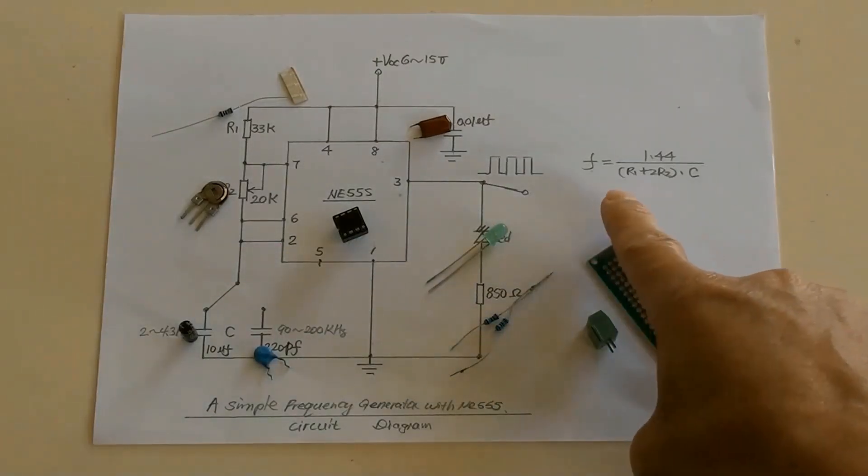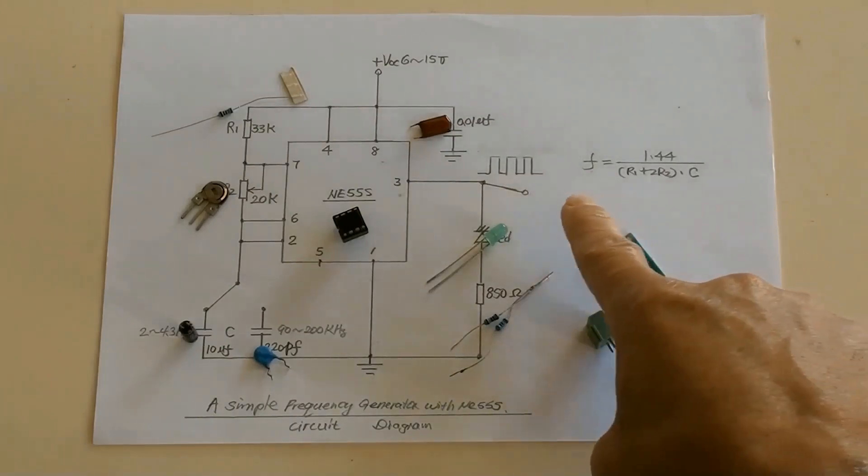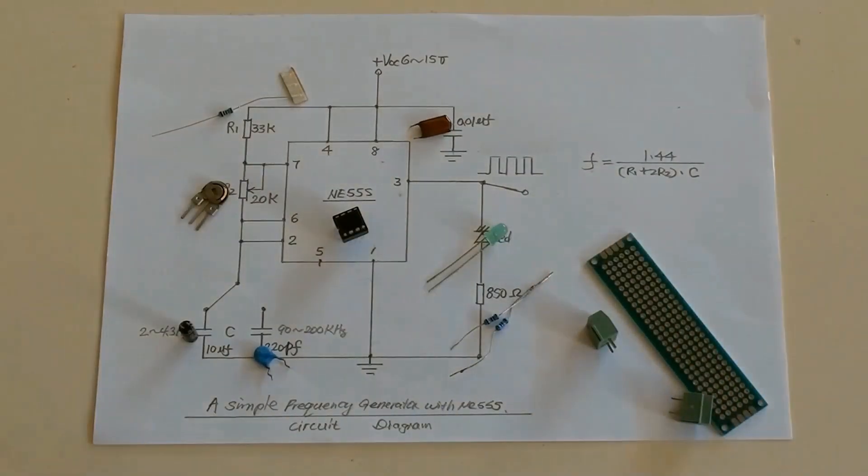This is the NE555 oscillator's frequency formula from its datasheet. Resistor R1, potentiometer R2, and capacitor C determine the oscillator's frequency. A capacitor of 10UF is for low frequency range. A capacitor of 220PF is for high frequency range.